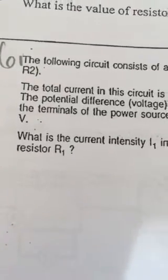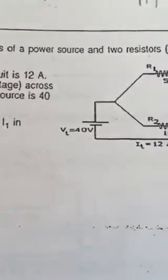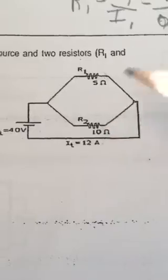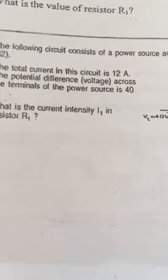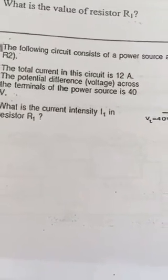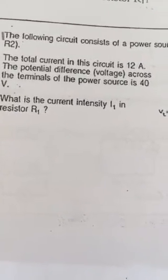Problem number six in the parallel circuit problems. The following circuit consists of a power source and two resistors R1 and R2. The total current in this circuit is 12 amps. The potential difference across the terminals of the power source is 40 volts. What is the current intensity I1 in resistor R1?